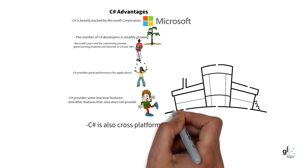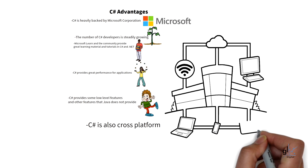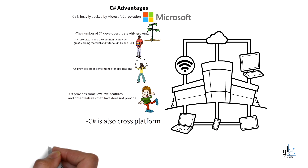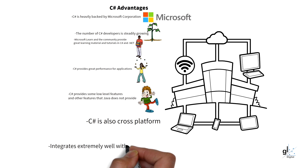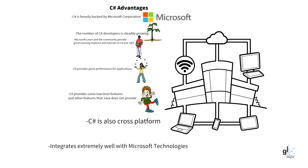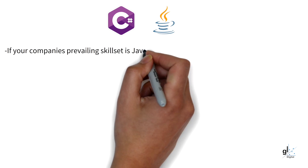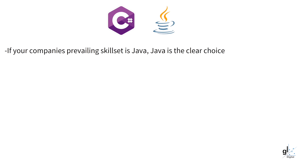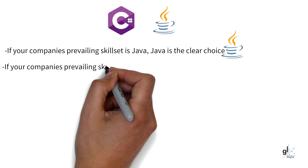If you need to create an application that integrates extremely well with Microsoft technologies, clearly .NET and C-Sharp should be your choice. These are both excellent software technologies and it really comes down to personal context. If you are a company that wants to create an enterprise greenfield application, the first question should always be: what existing skills do I already have in my company? If your prevailing skill set is Java, then Java is the clear choice. If your prevailing skill set is C-Sharp and .NET, then C-Sharp and .NET is the logical choice.